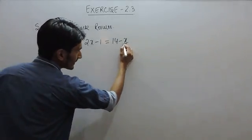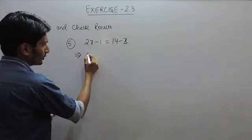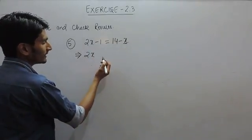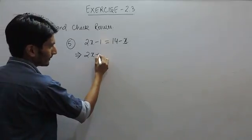So in this case, let's shift this minus x to this side. 2x will remain as it is, but when this minus x is shifted to this side it will become positive x.